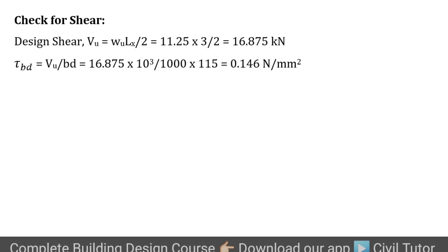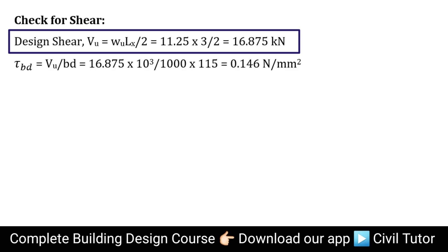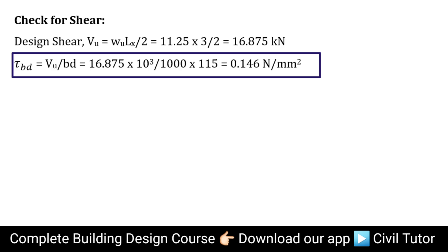Now we need to do the check for shear. To calculate the design shear, we have VU = WU × LX / 2, where WU is the factored load = 11.25 kN/m and LX is the shorter span = 3 m. On substituting, design shear VU = 16.875 kN. Tau_bd = VU / (B × D), where B = 1000 mm and D = 115 mm. On substituting, Tau_bd = 0.146 N/mm².